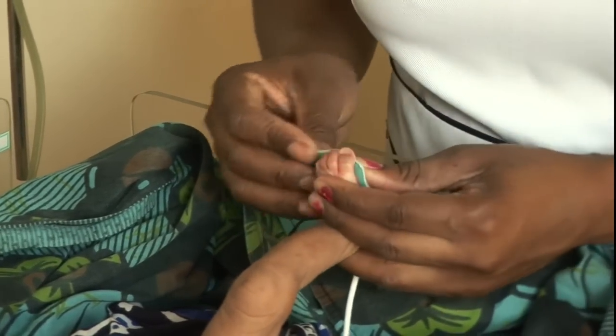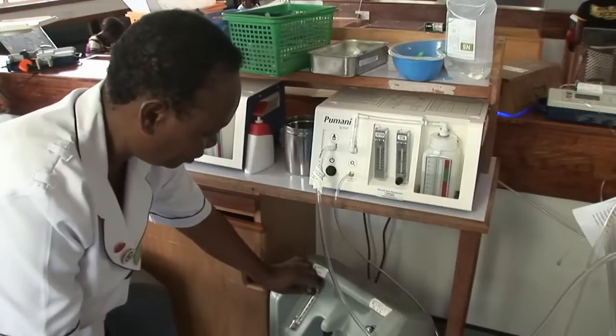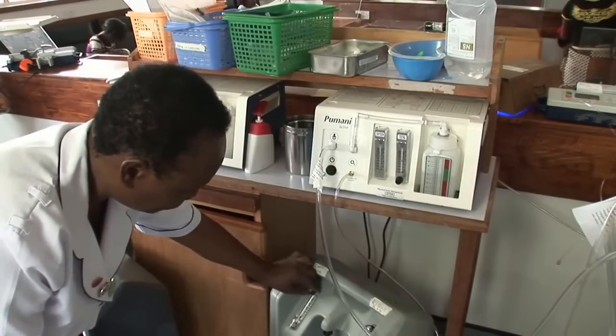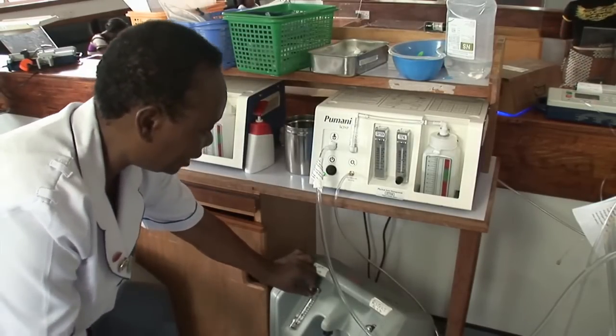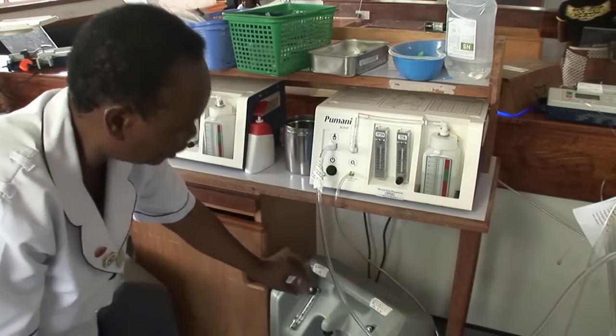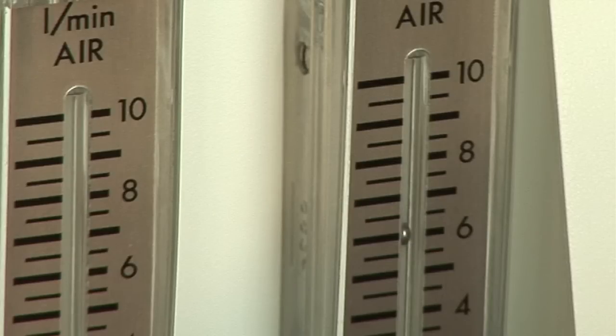If the SATs are still low after the first hour, you can turn up the oxygen. You do this on the concentrator, but make sure you also check the level on the CPAP machine. Turn it up by one liter per minute. Make sure the total flow is still at six liters per minute.